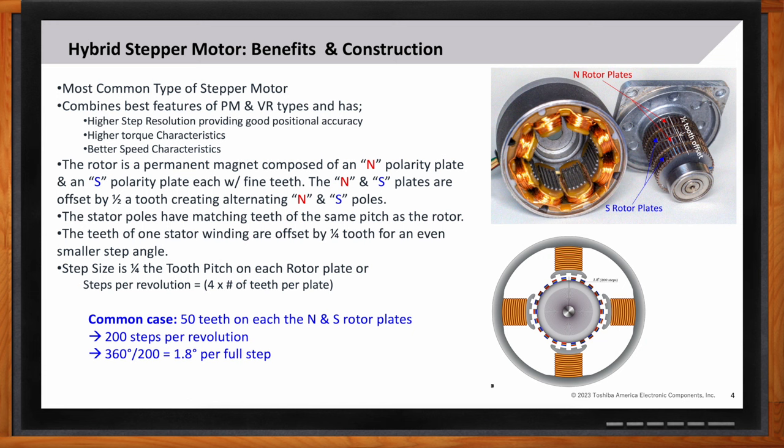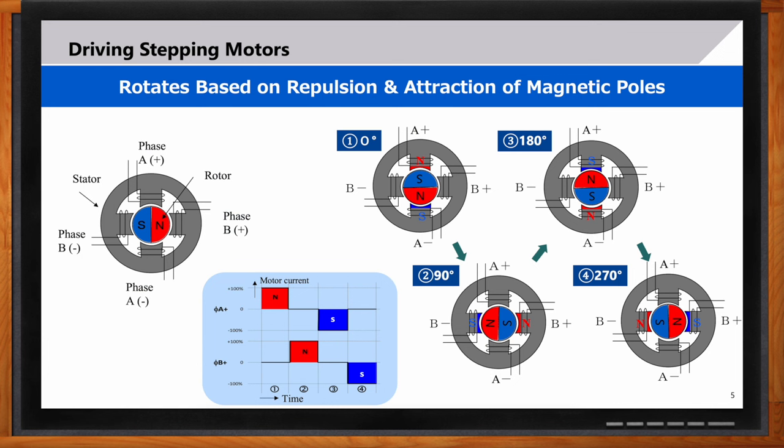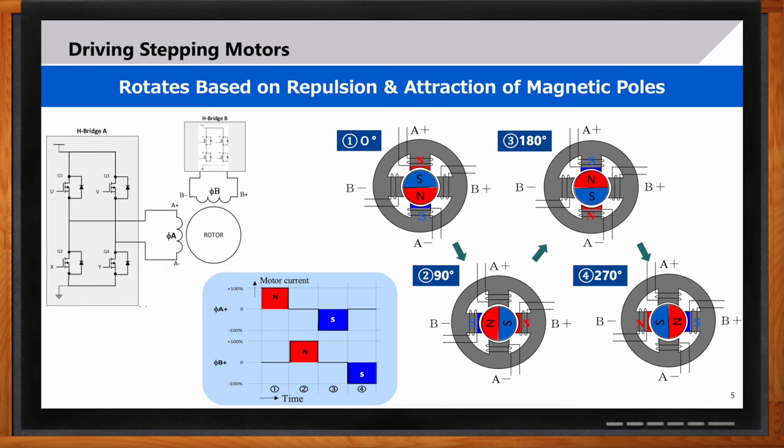Okay, so Doug, can we also get into the details on how to drive these motors as well? Sure. I'll use a simplified graphic here to show the basics of operation. The basic operation is the attraction and repulsion of magnetic poles. And the magnetic poles on the stator are switched by changing the current through the stator windings. To do this, we use H-bridges to drive the two coils, and these are basically what the motor control devices, or the MCDs, are controlling.